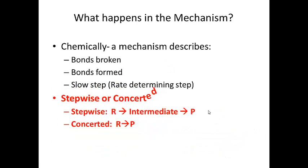A mechanism describes the bonds broken, the bonds formed, and it helps describe the slow step, which in chemistry we call the rate determining step. The slow step means that's the step in the reaction that holds everything else up. The reaction only goes as fast as that step is.